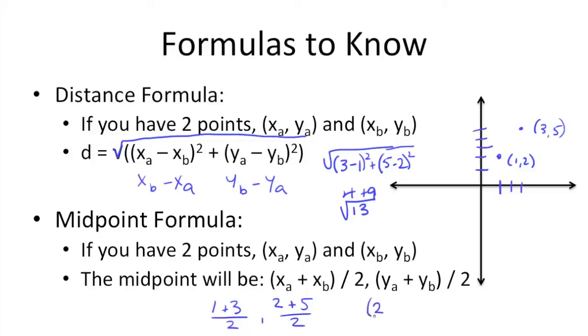And we get 2 plus 5, which is 7, divided by 2. 7 over 2. Simplify it out. That's just 2 and 3 and a half.